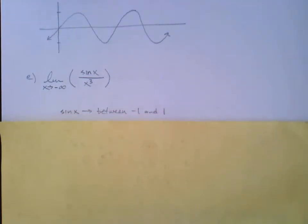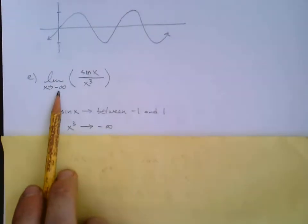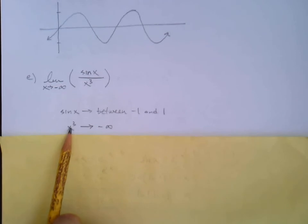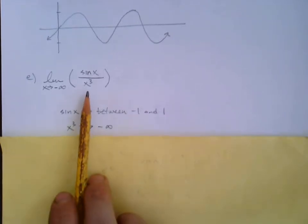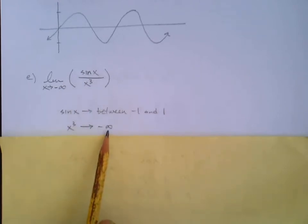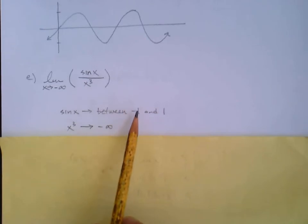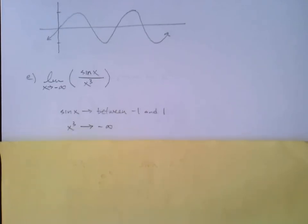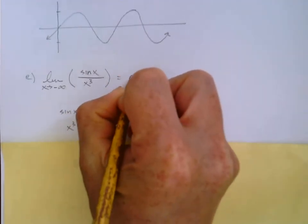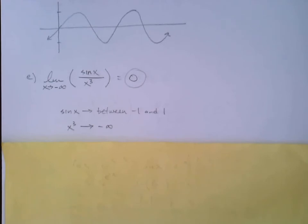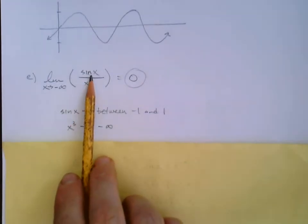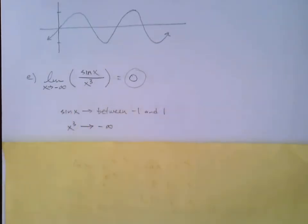Sine x stays between negative one and one, but x cubed is approaching negative infinity — a negative to the third power is still negative. So we're dividing by a very large negative number. The numerator is caught between negative one and one while the denominator grows bigger and bigger in the negative direction, so the whole thing equals zero.